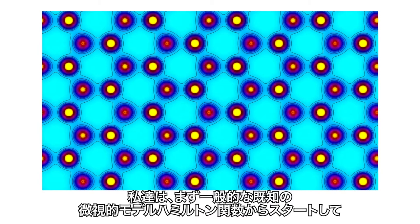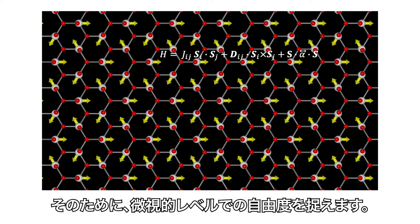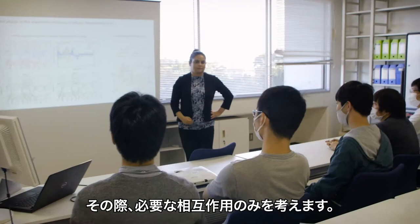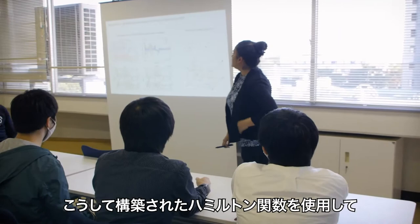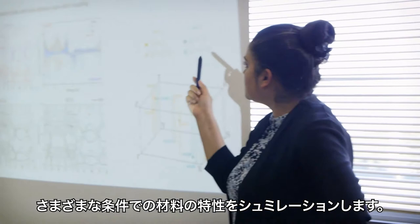How do we do that? We start from a general known microscopic model Hamiltonian. Then we develop a material-specific model by capturing the relevant microscopic degrees of freedom, such as magnetic, electronic, lattice, and orbital degrees of freedom, and the interactions between them. Through this process, we use various ab initio electronic structure techniques, and the constructed Hamiltonian is used to simulate various properties of the material at finite temperature and at various conditions.